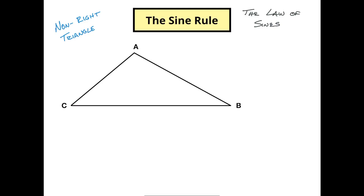If we call this angle A, then the opposite side is going to be side A. If this is angle B, we call this side B. And if this is angle C, we call this side C. Now I'm going to refer back to a formula we used for the area of non-right triangles — make sure you check that video out if you haven't seen it already.